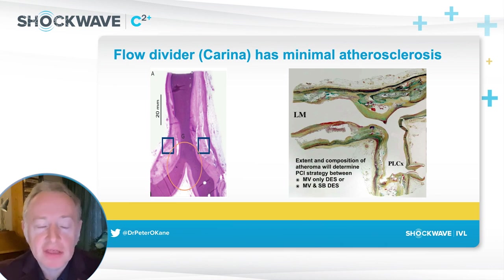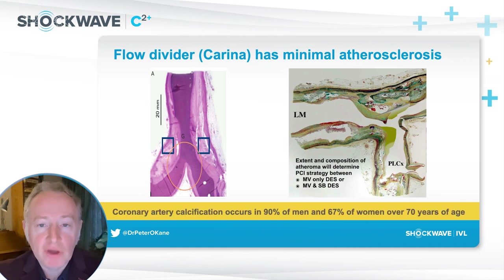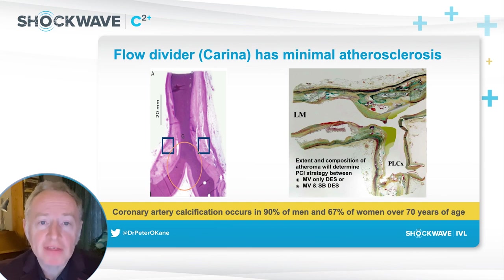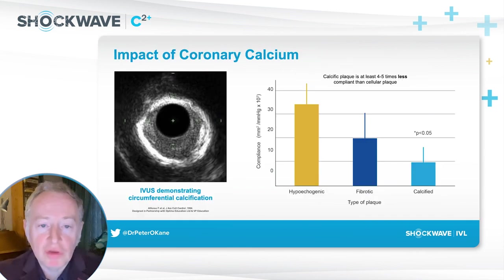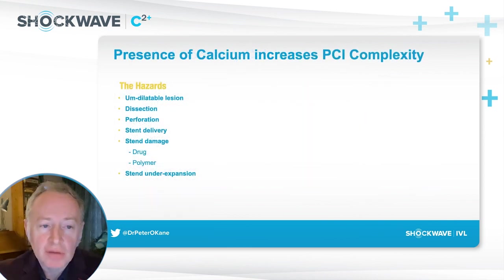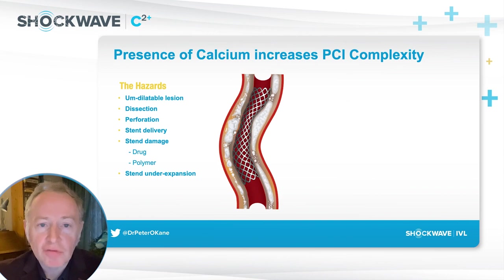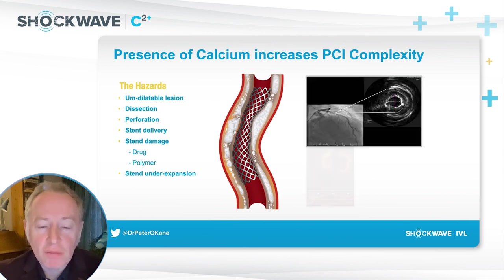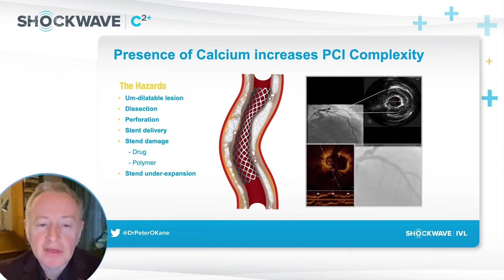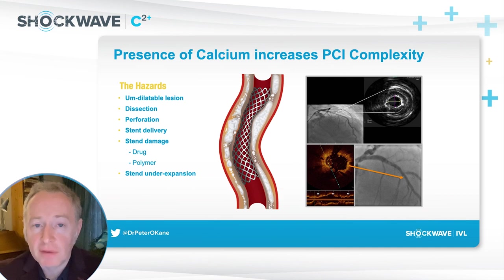The left main is a very important bifurcation that we treat, and as you can see, the disease usually avoids the flow divider. We have to decide not only how to stent the vessel with one or two stents, but we have to work out how we're going to prepare the vessel. Calcification is the largest problem we face, as it's much more common as we treat older patients. Calcium affects how we can stretch the artery and prepare the vessel, and probably the most important complication is the under expansion of the stent.